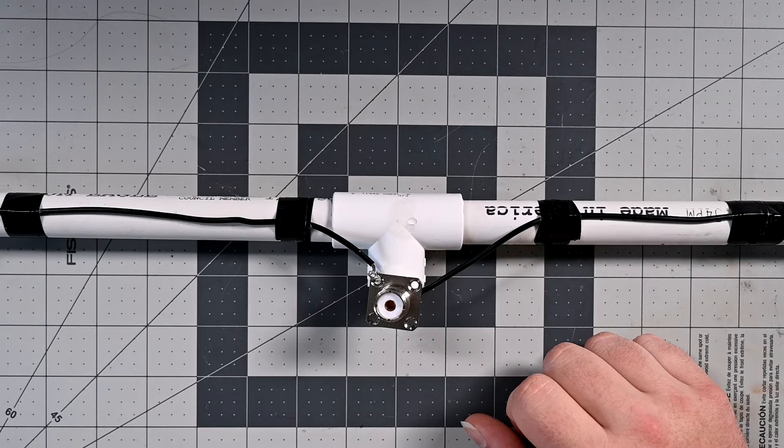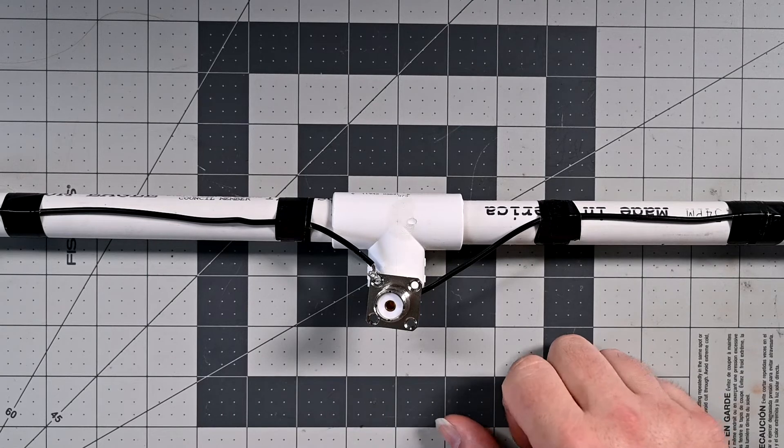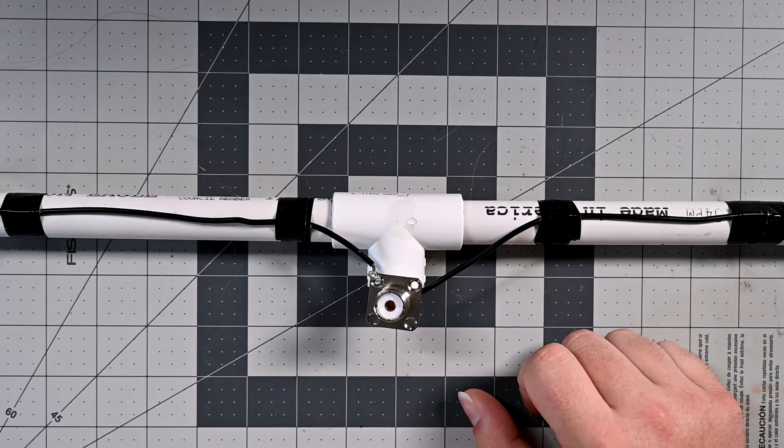But anyway, without further ado, let's go ahead and talk about what this actually is. So this is a dipole antenna and it's about as simple as you can possibly make a dipole antenna or any antenna for that matter.